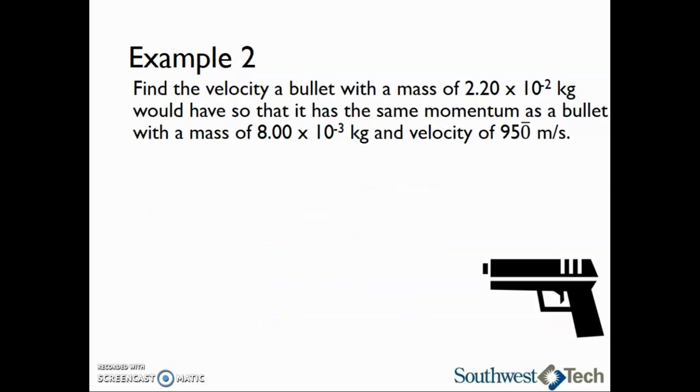Let's take a look at one more momentum example. Find the velocity a bullet with a mass of 2.20 times 10 to the minus 2 kilograms would have so that it has the same momentum as a bullet with a mass of 8.00 times 10 to the minus 3 kilograms and a velocity of 950 meters per second. There are a couple of ways we can think about this problem. However, first we want to record all of the information we know and what we are trying to find.